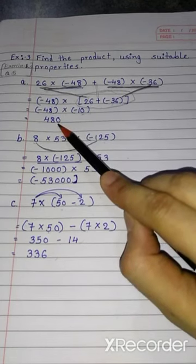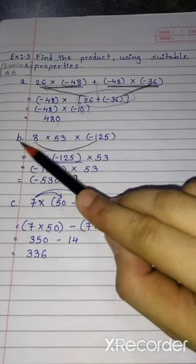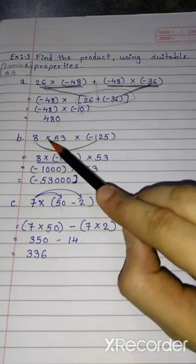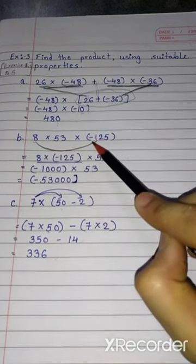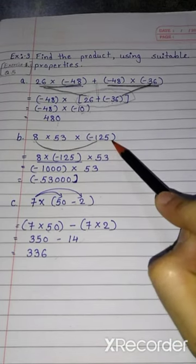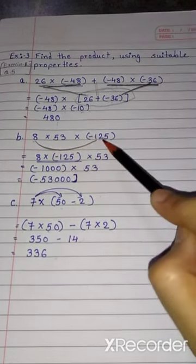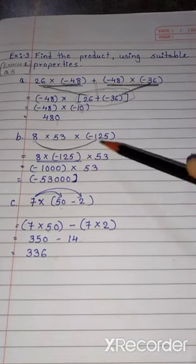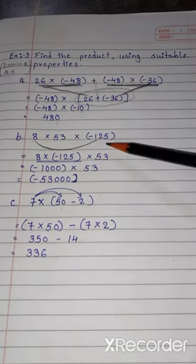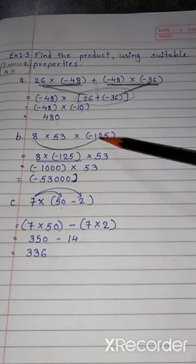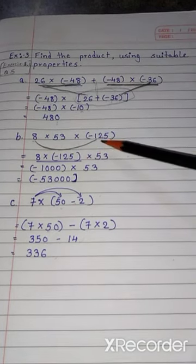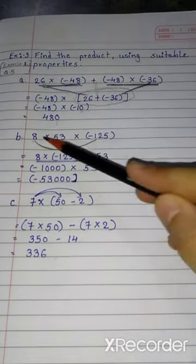Let's move to the second sum, Number B. 8 into 53 into minus 125. Here we have to multiply three numbers. As we know, if we need to multiply three numbers, we can choose any two numbers first for multiplication.